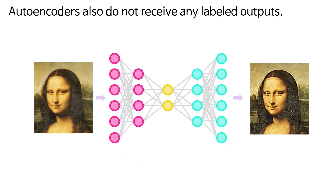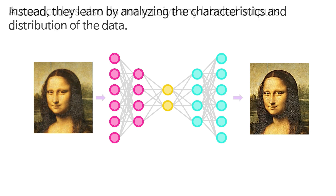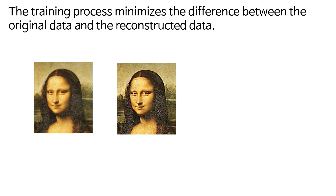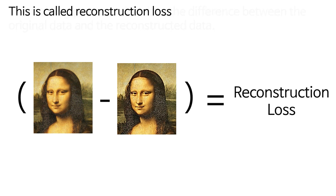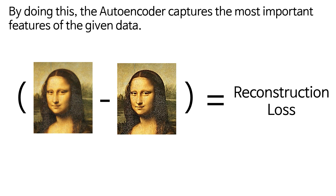Autoencoders also do not receive any labeled outputs. Instead, they learn by analyzing the characteristics and distribution of the data. The training process minimizes the difference between the original data and the reconstructed data. This is called reconstruction loss. By doing this, the autoencoder captures the most important features of the given data.